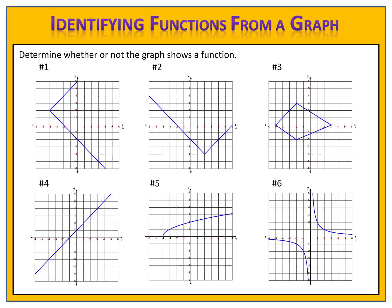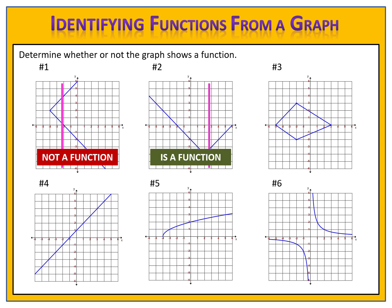Let's compare answers. We're looking to see if each input produces exactly one output, or if any inputs produce more than one output — meaning we don't have a function. We can use the vertical line test to help us. In the first graph, the input negative two produces more than one output, so this graph is not a function. In graph two, no matter where we place our vertical line, we only hit the blue graph once — each input produces exactly one output, so this graph is a function. In graph three, at the input negative one, we have two different outputs — this is a violation of what it means to be a function, so graph three is not a function.